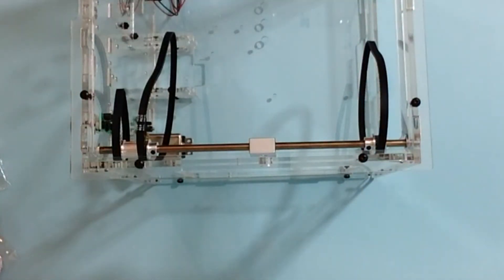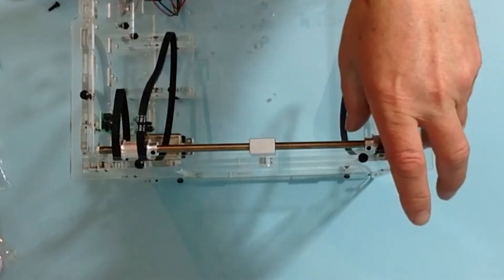Once you've done that, take a small screw that was provided and fit the screw into the side of the shaft.